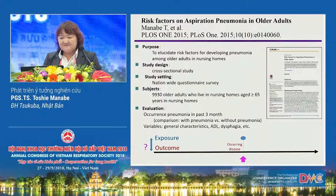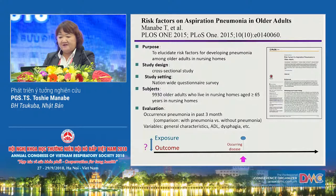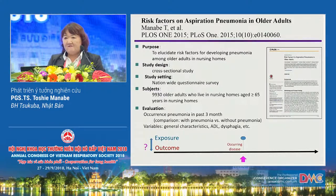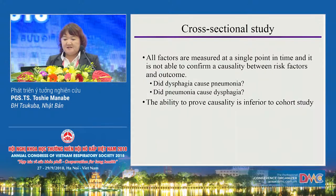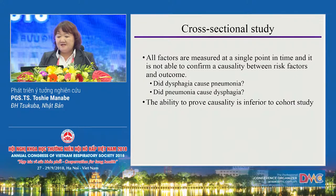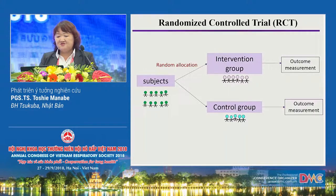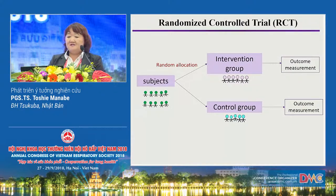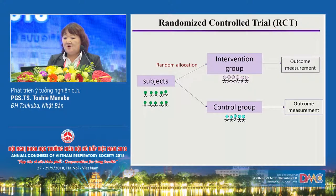Second session: risk factors of aspiration pneumonia in older adults. This is a questionnaire survey, and questionnaire surveys are usually used for cross-sectional studies. The ability to prove causality is inferior to a cohort study. Intervention study divides subjects and allocates them to either intervention or control.